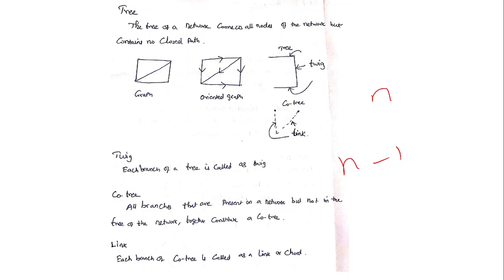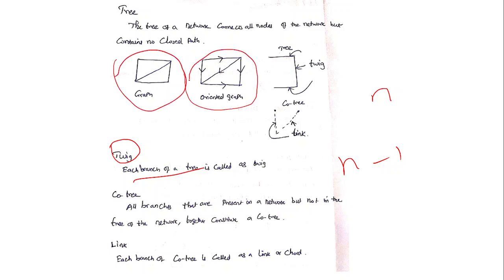The name of a branch in a tree is called a twig — each branch of a tree is called a twig. Here is an example of a graph and an oriented graph, which is just giving direction to each line segment. From this graph I can draw a tree. We have four nodes, so for n equal to four we need only three branches or three twigs to complete a tree. I'm connecting all four nodes — this is called a tree.